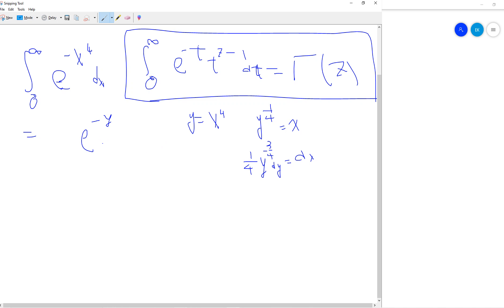So dx is just 1 over fourth y to the minus 3 over 4 dy. And y is still from 0 to infinity.